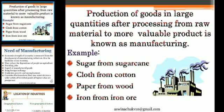For example, sugar can be made from cotton, and paper from wood. To produce a finished product, we need raw materials like cotton which go through processing. Similarly, iron is another example of a manufactured product.